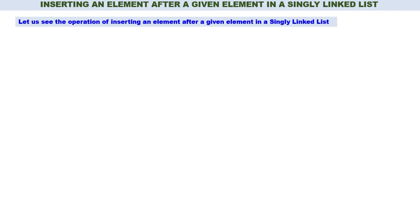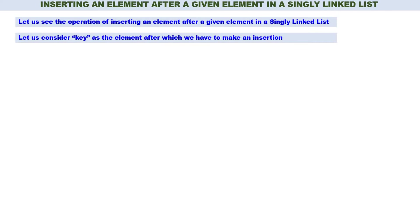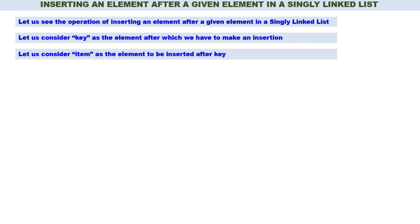In this video we will discuss how to insert an element after a given element in a singly linked list. Let us consider key as the element after which we have to make an insertion, and item as the element to be inserted after key. So in the singly linked list we have to search for key, and after key we have to insert item.